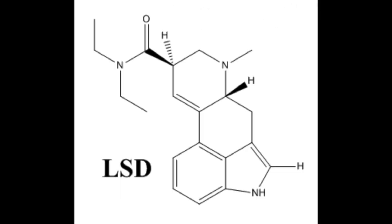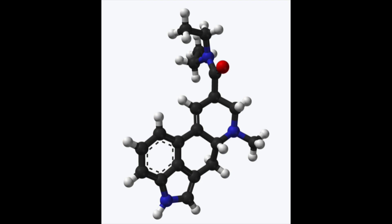Structurally, LSD is a chiral compound with two stereocenters at the C5 and C8 carbon atoms with the configuration 5R8R. LSD is synthesized as a derivative of ergoline, which comes from the ergot fungus and the squill plant.